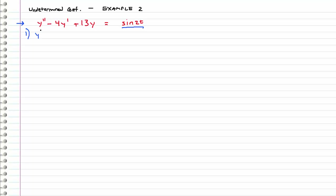We are going to take y double prime minus 4y prime plus 13y equals 0 — the homogeneous equation — and solve this. We have a constant coefficient case, so let's go straight into the characteristic equation: r squared minus 4r plus 13 equals 0.